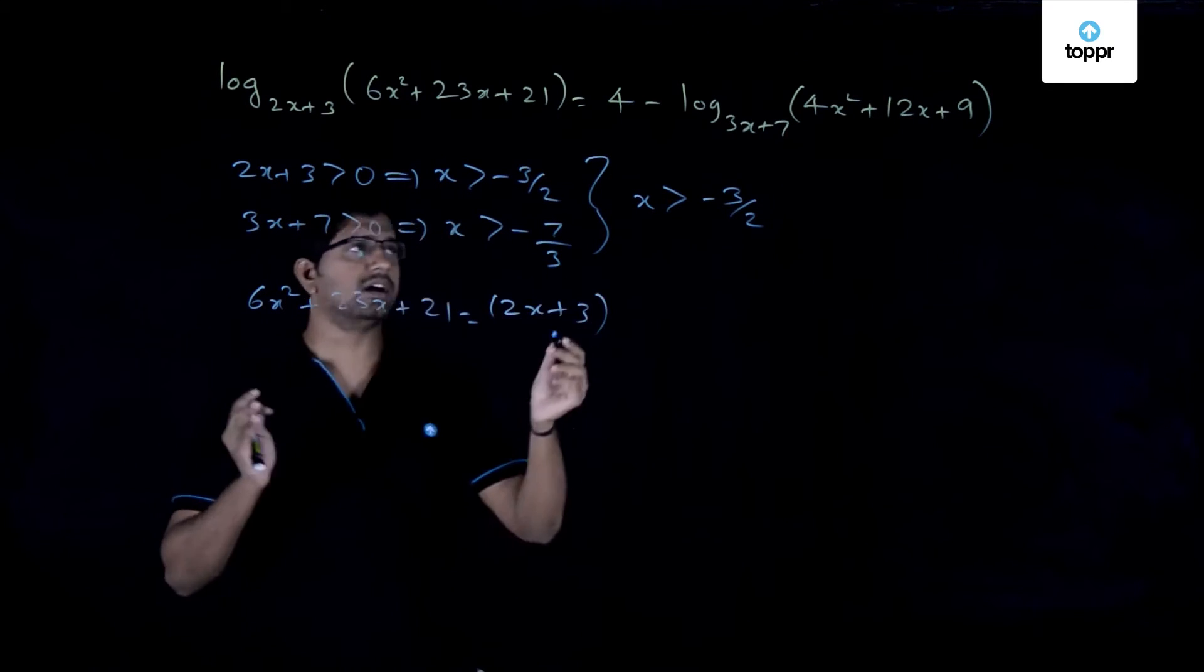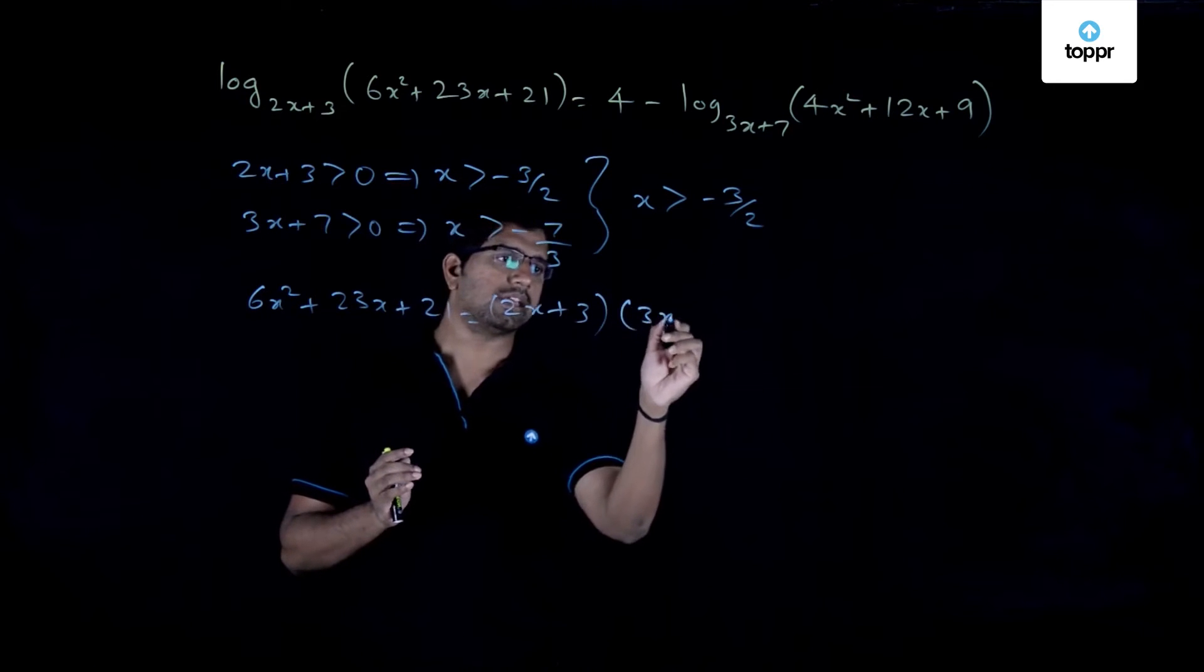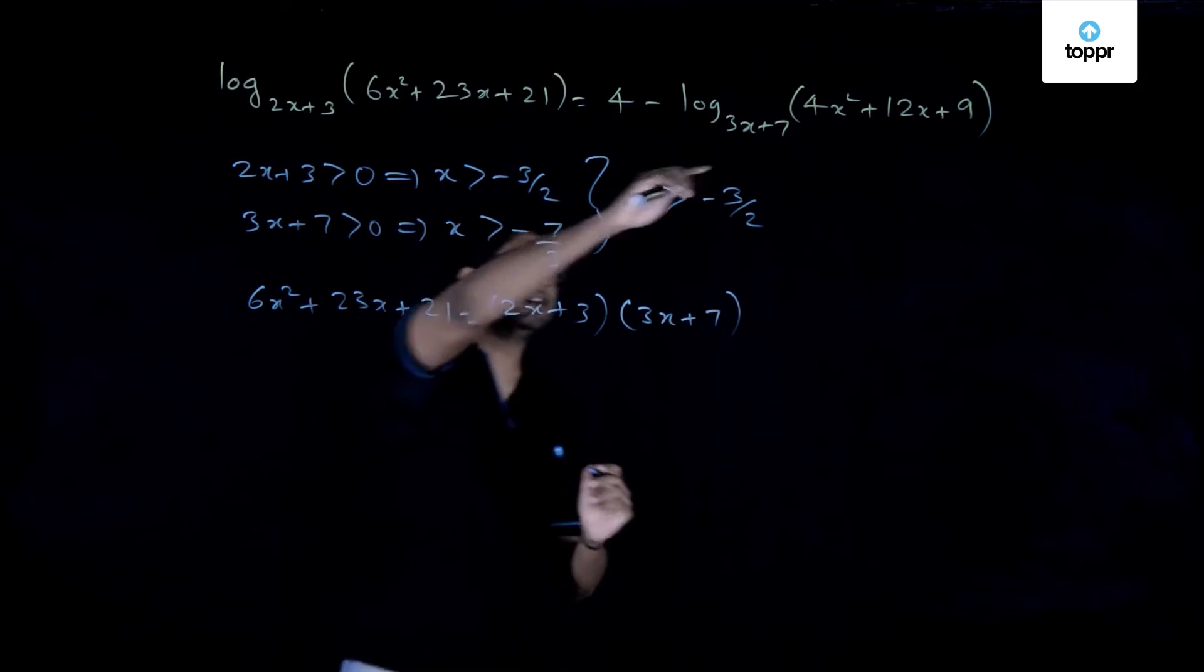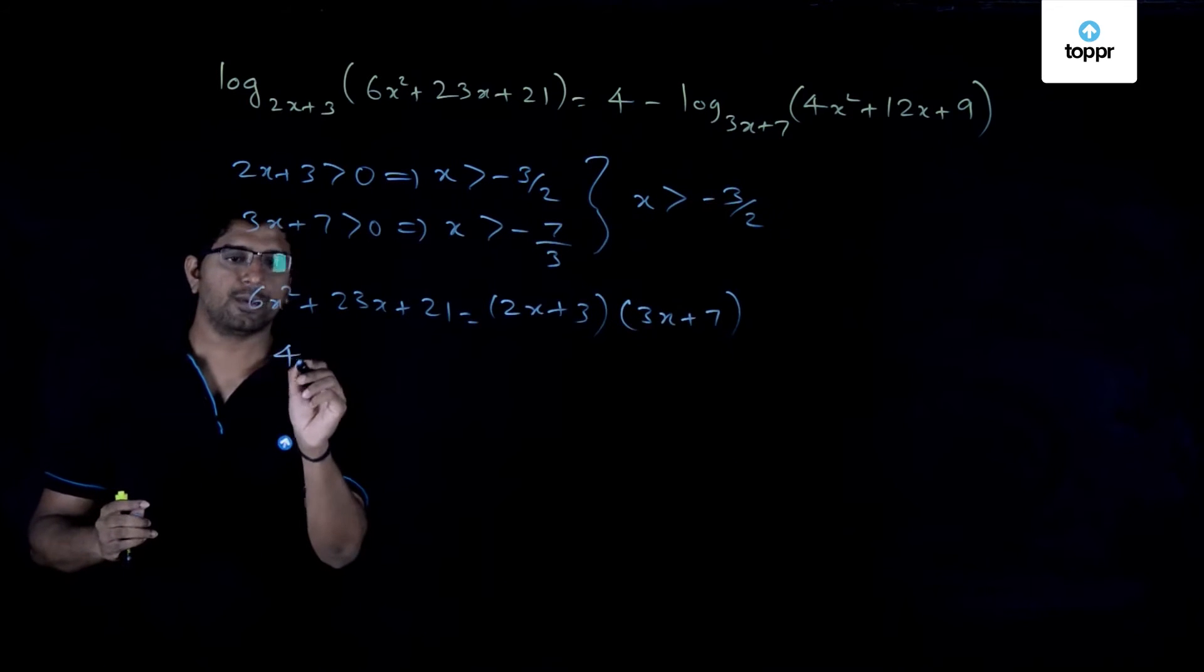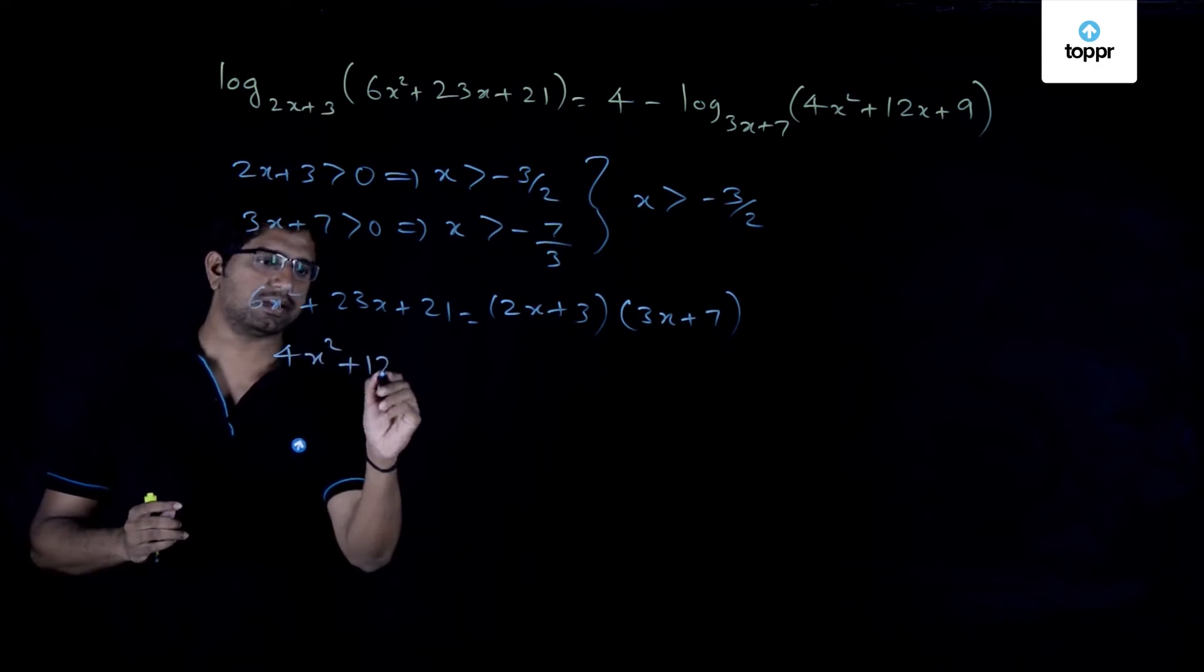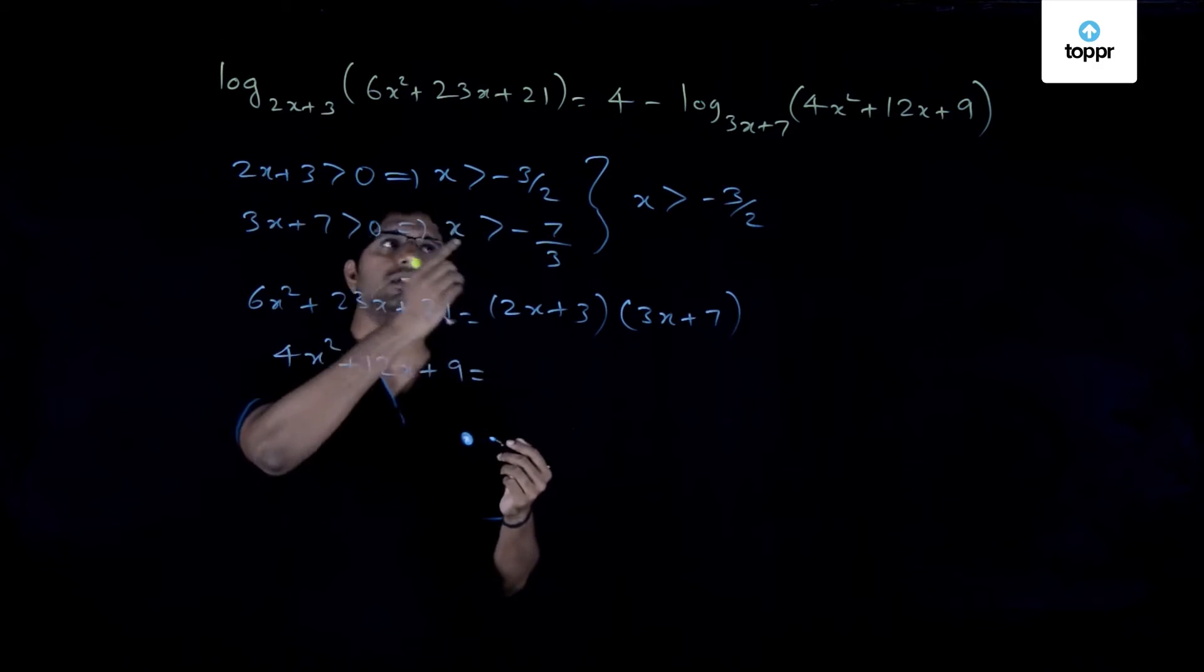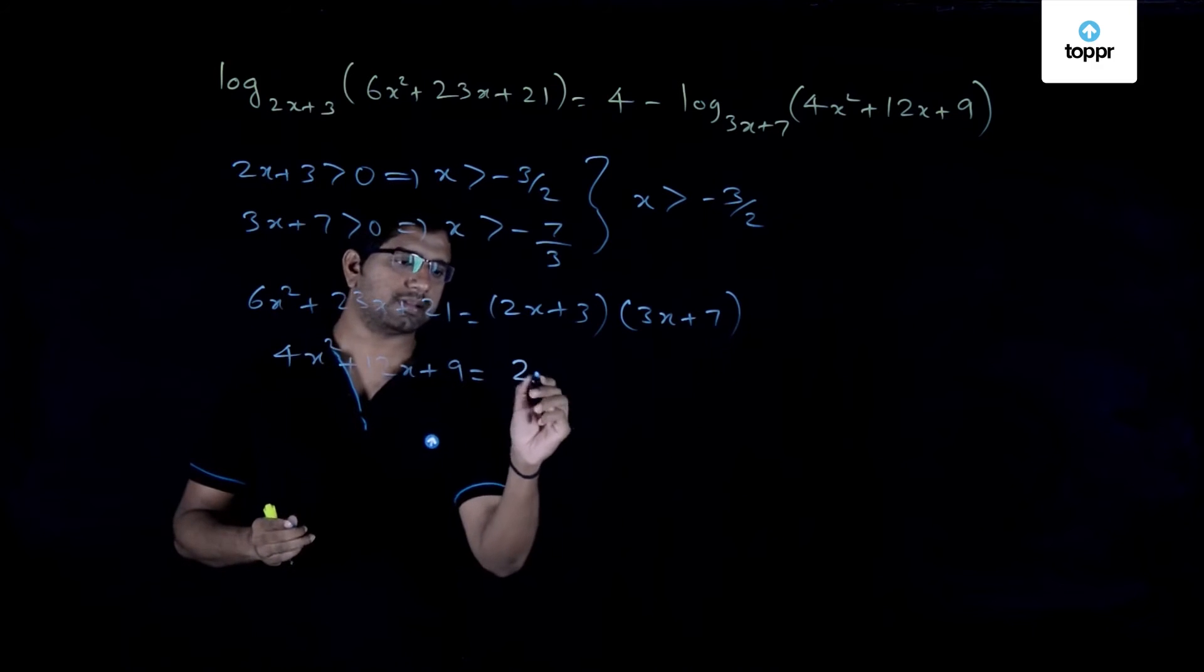So simple work will give you that this is the product of these 2 bases. And further, the thing which is given here, 4x² + 12x + 9, this expression is actually nothing but the square of the base 2x+3.